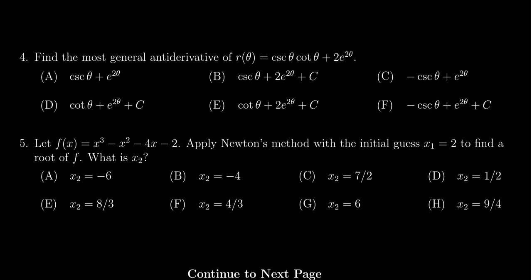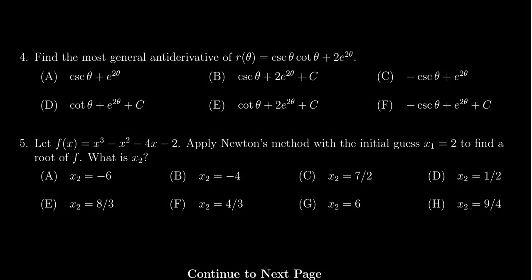In this video, we provide the solution to question number four for practice exam number four for math 1210, in which case we're asked to find the most general antiderivative of the function r of theta equals cosecant theta times cotangent theta plus two times e to the two theta.